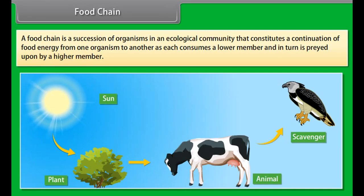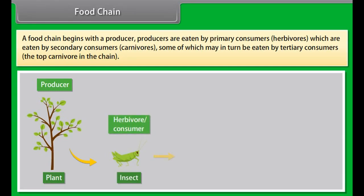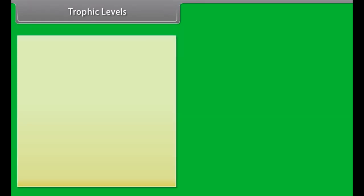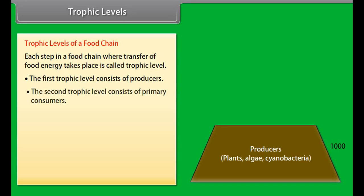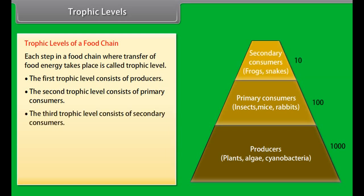Food Chain. A food chain is a succession of organisms in an ecological community that constitutes a continuation of food energy from one organism to another, as each consumes a lower member and in turn is preyed upon by a higher member. A food chain begins with a producer. Producers are eaten by primary consumers — herbivores — which are eaten by secondary consumers — carnivores — some of which may in turn be eaten by tertiary consumers, the top carnivore in the chain.